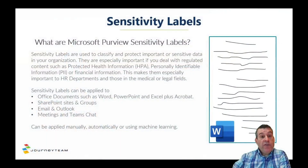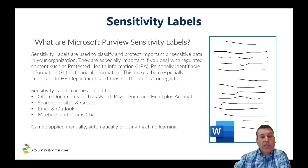Microsoft calls it a Microsoft PureView sensitivity label. They are used to keep information secure and make sure that only the right people have access to information contained in documents. It's especially important if you work in a regulated industry such as healthcare, law, or finance. In the case of healthcare, for example, if you have protected health information, HIPAA says you have to protect that information. Sensitivity labels are one way that you can do that.